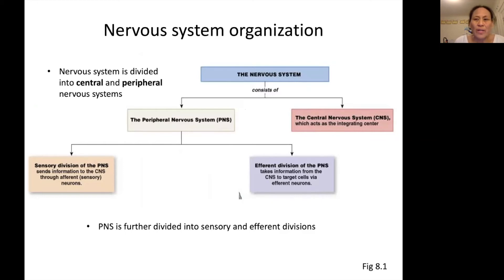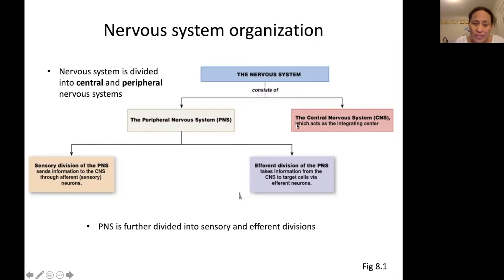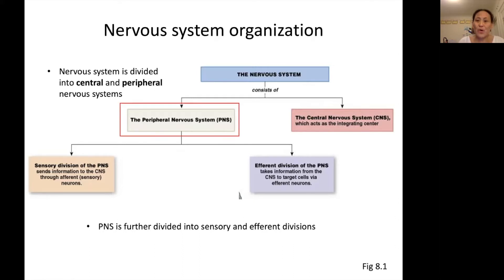We have one last little section here. Remember we're looking at the organization of the nervous system. The nervous system consists of the central nervous system — the brain and the spinal cord — and then the peripheral nervous system, which is everything else. We just went over the central nervous system, and now I'm going to say a few words about the peripheral nervous system.